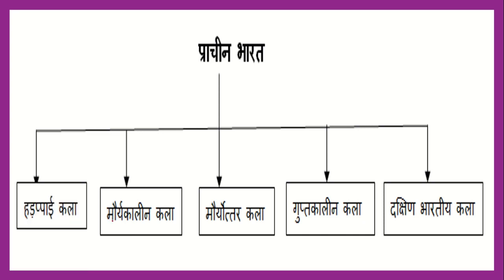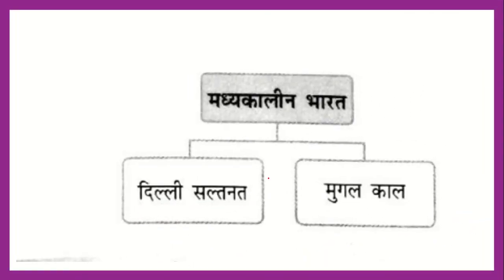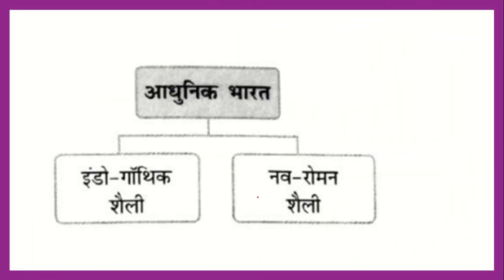Today I will complete the Darbari Kala. Then we will see Moriottar Kala, then Gupta Kalin Kala, then Dakshin Bharti Kala. Then we will come to Madhya Kala — there will be 2 Kalas: Dilli Sultanate and Mughal Kala. Then we will see the Adhunik period. In Adhunik, there are also 2 styles: Indo-Gothic Shali and Nav Roman Shali. We will cover these two topics.